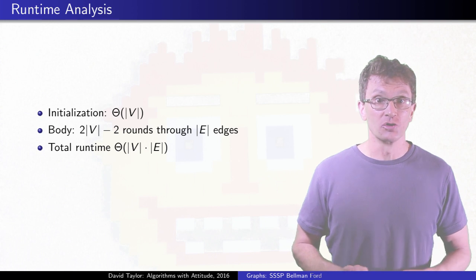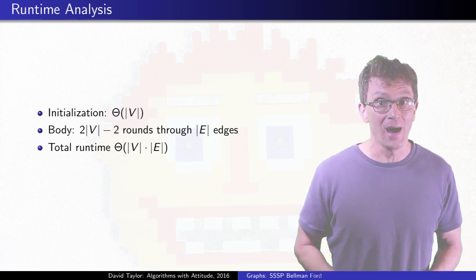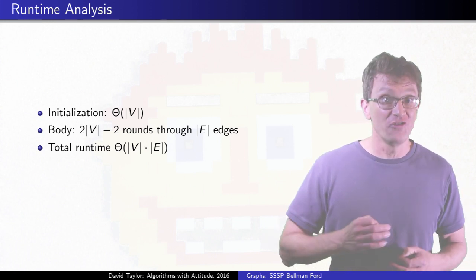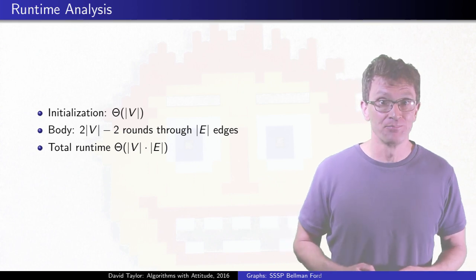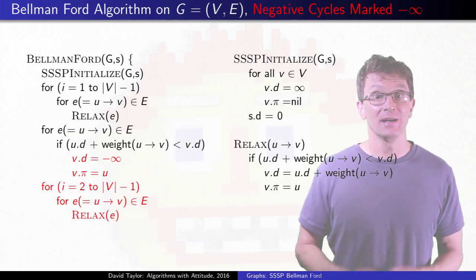Each of those versions goes through all edges order V times, and they take order V times E time. But this code is really kind of dumb.